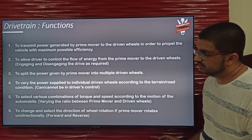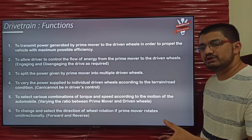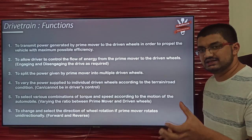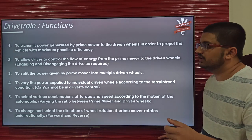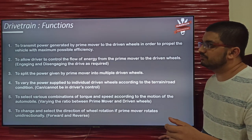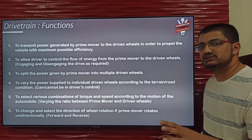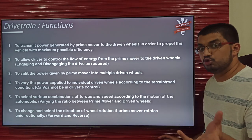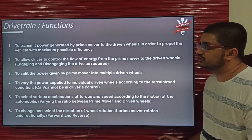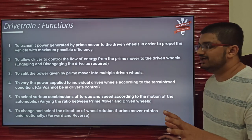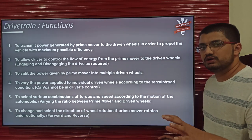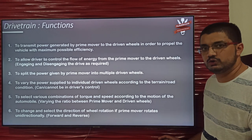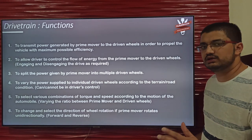The third function: the prime mover gives power output through a single shaft, but multiple times we need to split this power into either two wheels or four wheels — more wheels than one shaft. So we need to split the power, which is done by the drivetrain. There are various components responsible for this, which we'll look at in the next slides.